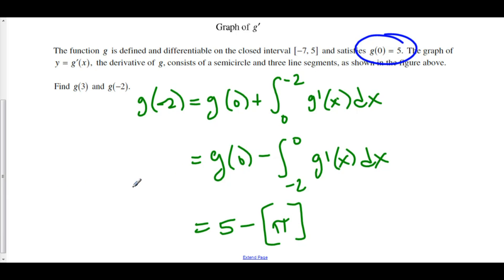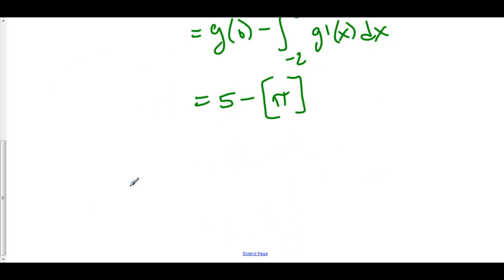So, that means that g of negative 2 is equal to 5 minus pi. 5 being the value at 0 and we went backwards pi.